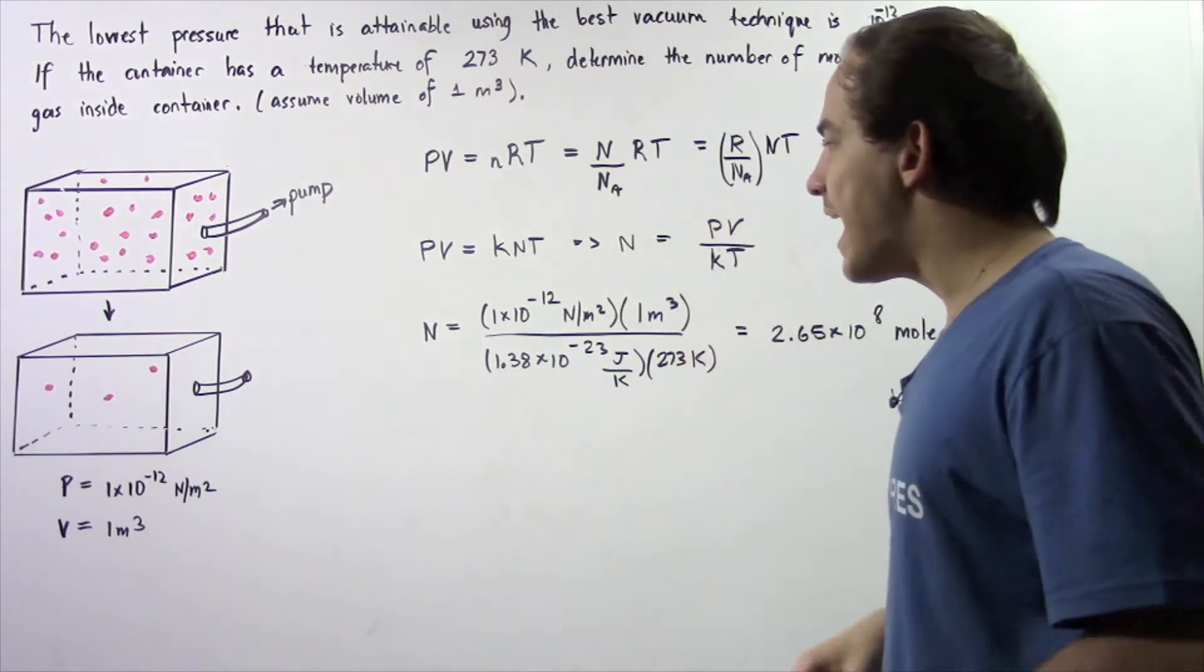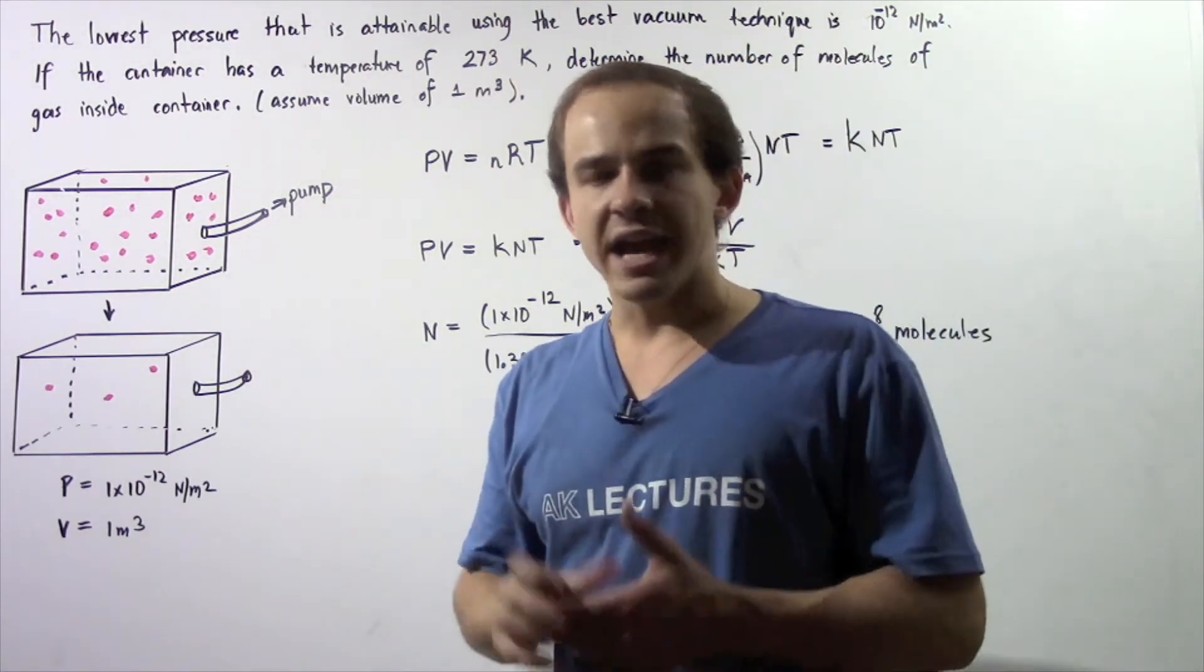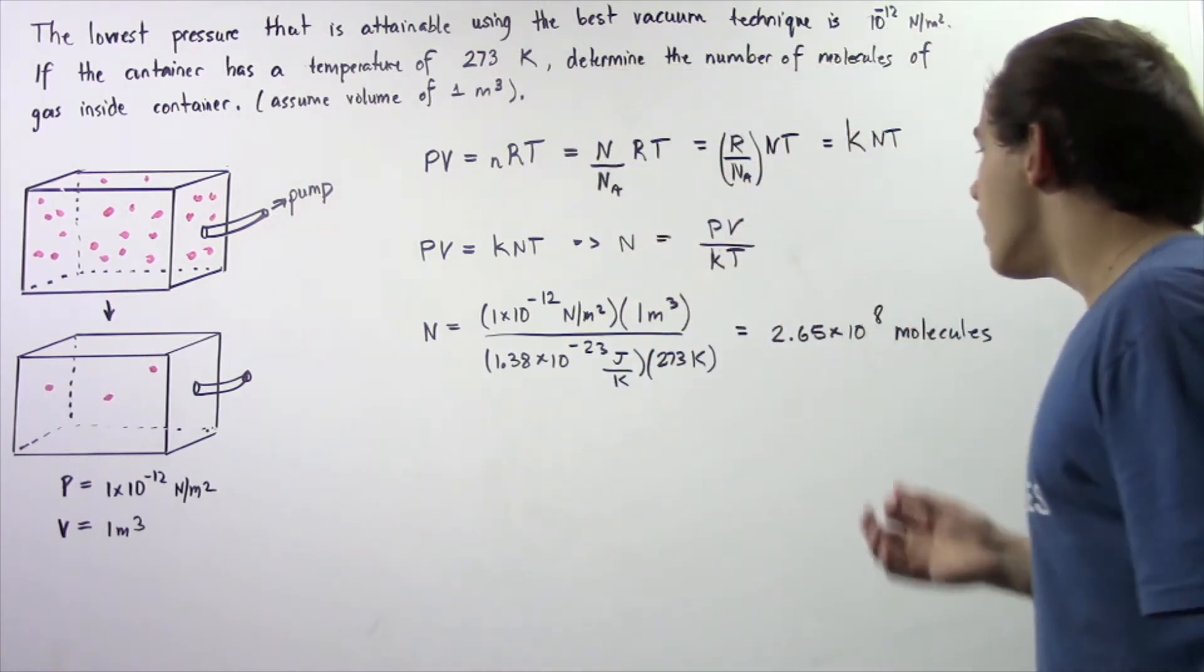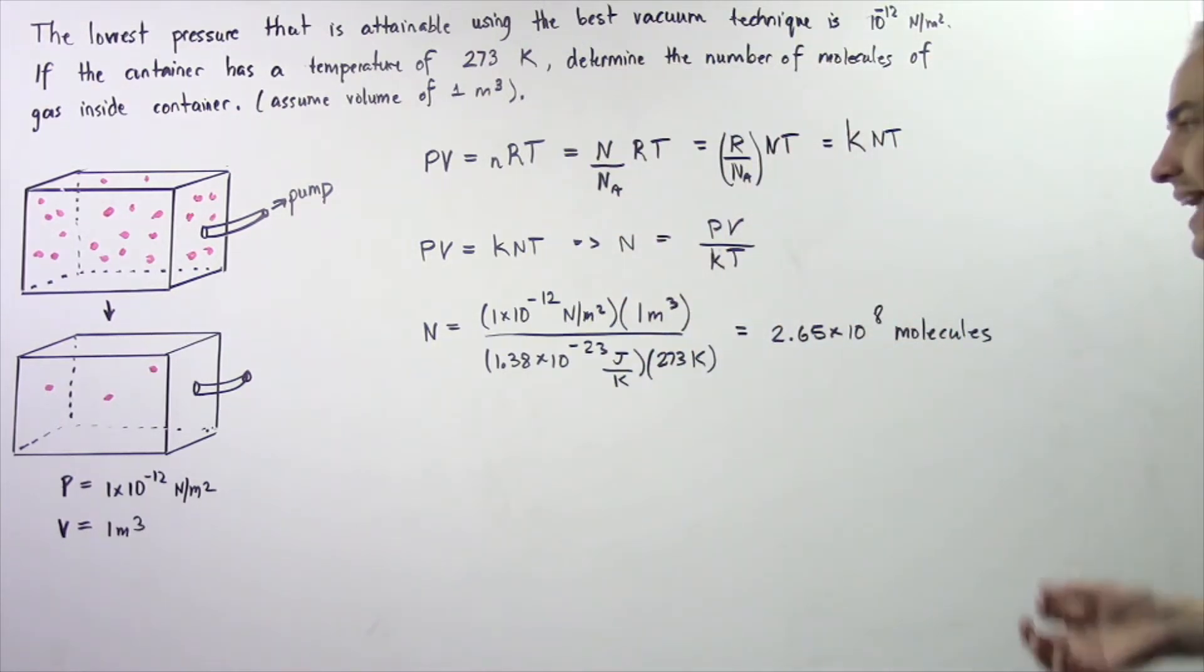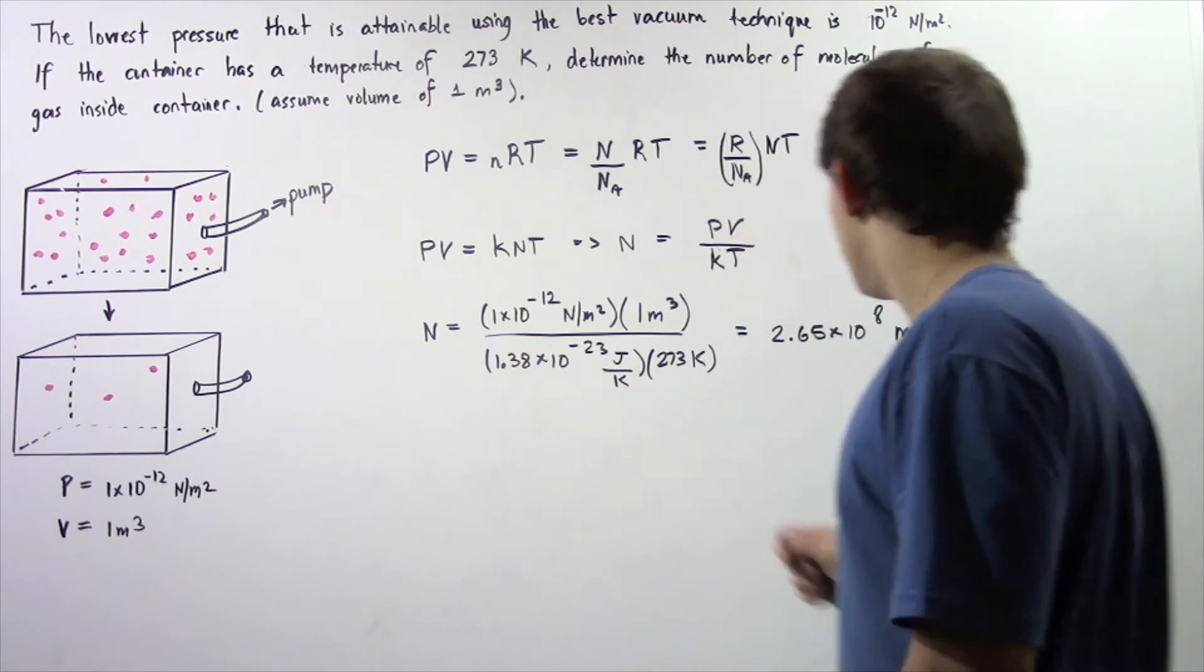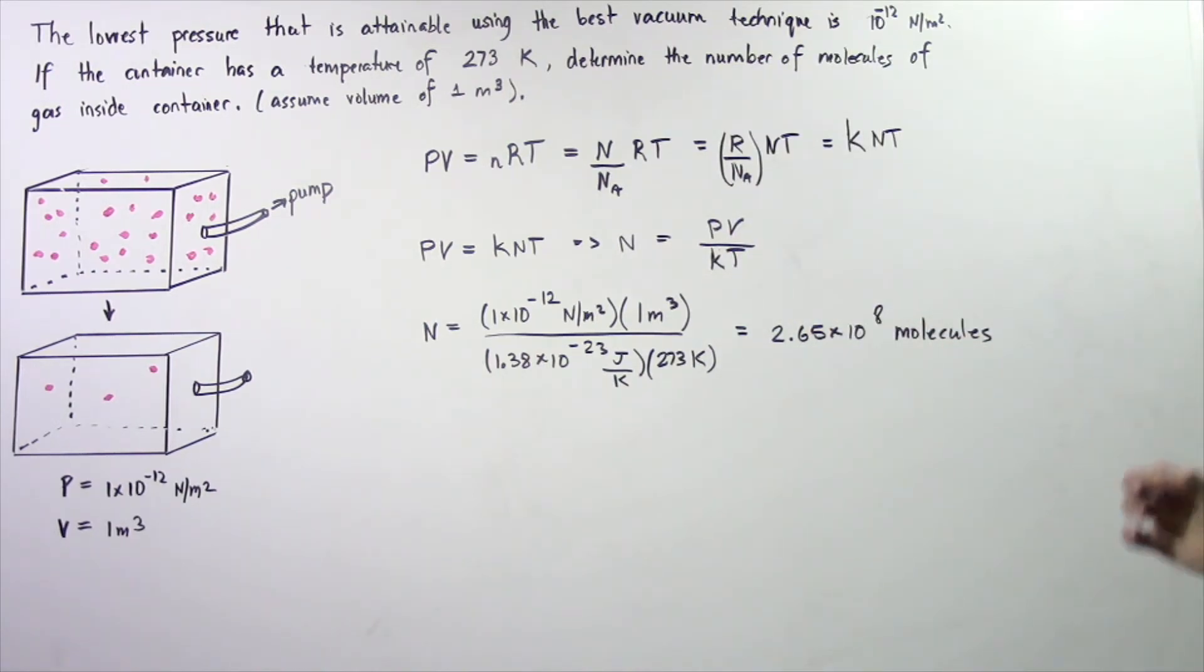So we plug these values into our calculator and we find that the number of molecules remaining inside our container is 2.65×10^8 molecules.